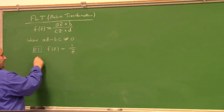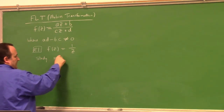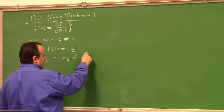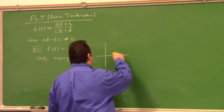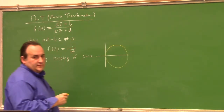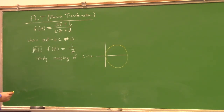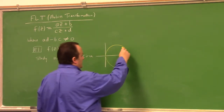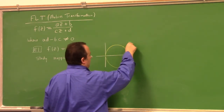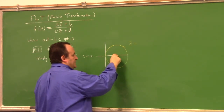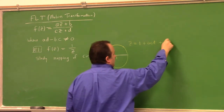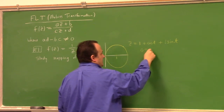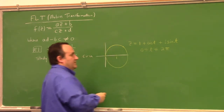Let's look at inversion and try to map a circle through the origin. We parametrize the circle: let's say the circle has radius 1 centered at 1, so z equals 1 plus cos(t) plus i·sin(t), for 0 ≤ t ≤ 2π. That gives you a counterclockwise oriented circle using standard parametric formulas from calculus 3.